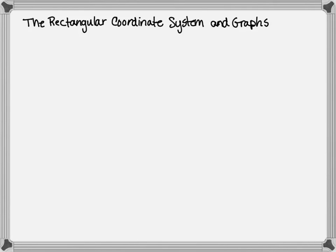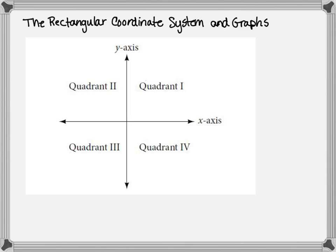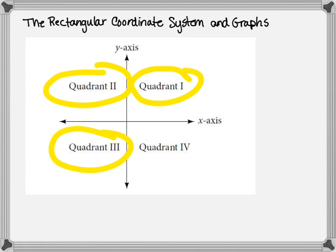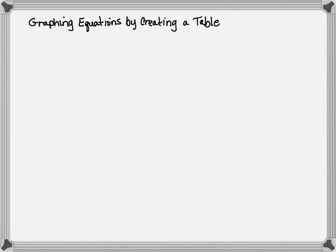Let's do a quick review of the rectangular coordinate system and graphs. Here is the coordinate plane broken up into its four quadrants: the first quadrant, second quadrant, third quadrant, and fourth quadrant. In general, the numbering system has them forming a C, and points are plotted as XY coordinates.